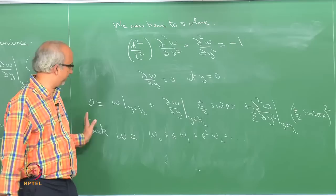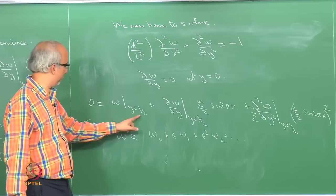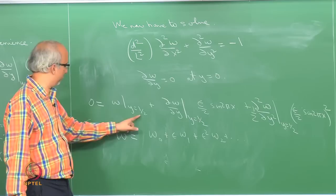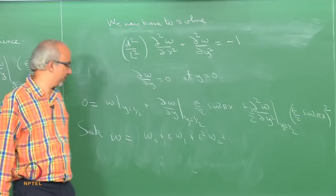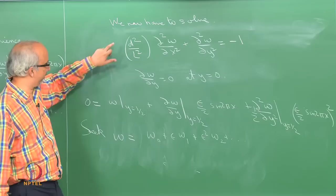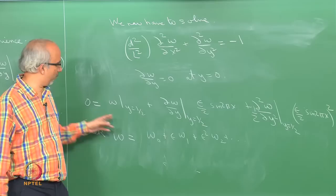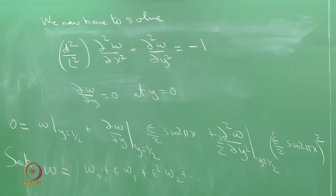Now I substitute this expansion everywhere: in the differential equation, in the symmetric boundary condition, and in the no-slip boundary condition, and group terms of order ε⁰, ε¹, ε², etc. Let us do the challenging one — the no-slip boundary condition. I substitute w = w₀ + εw₁ + ε²w₂ into the Taylor-expanded boundary condition.